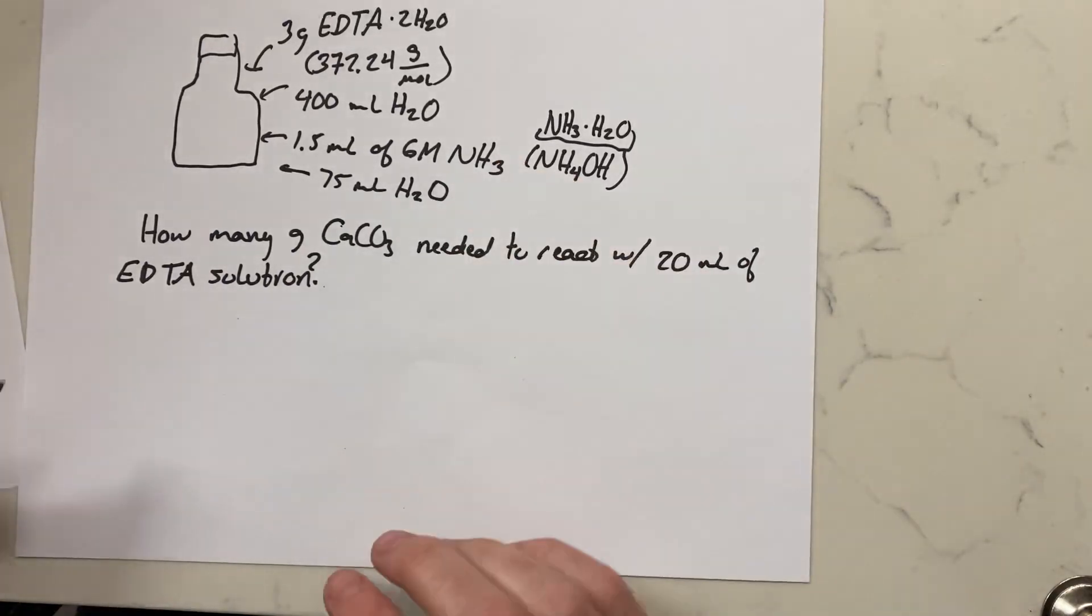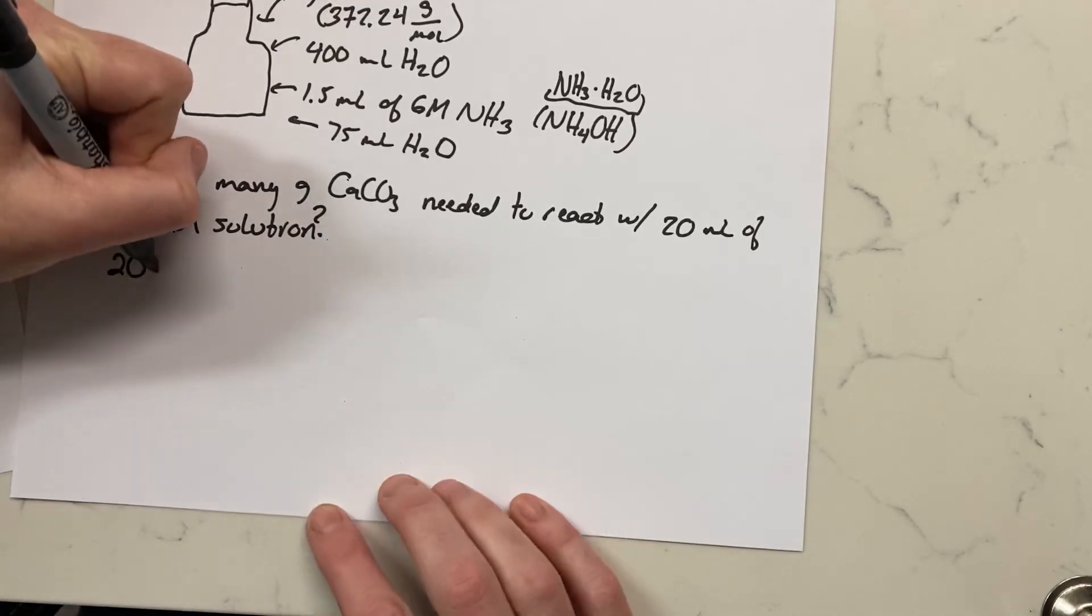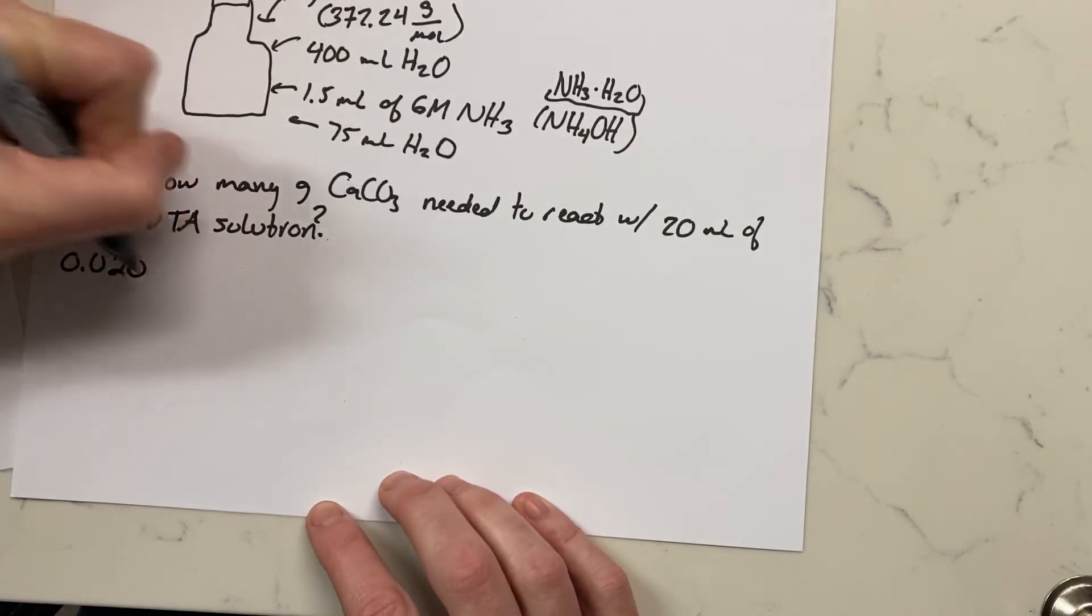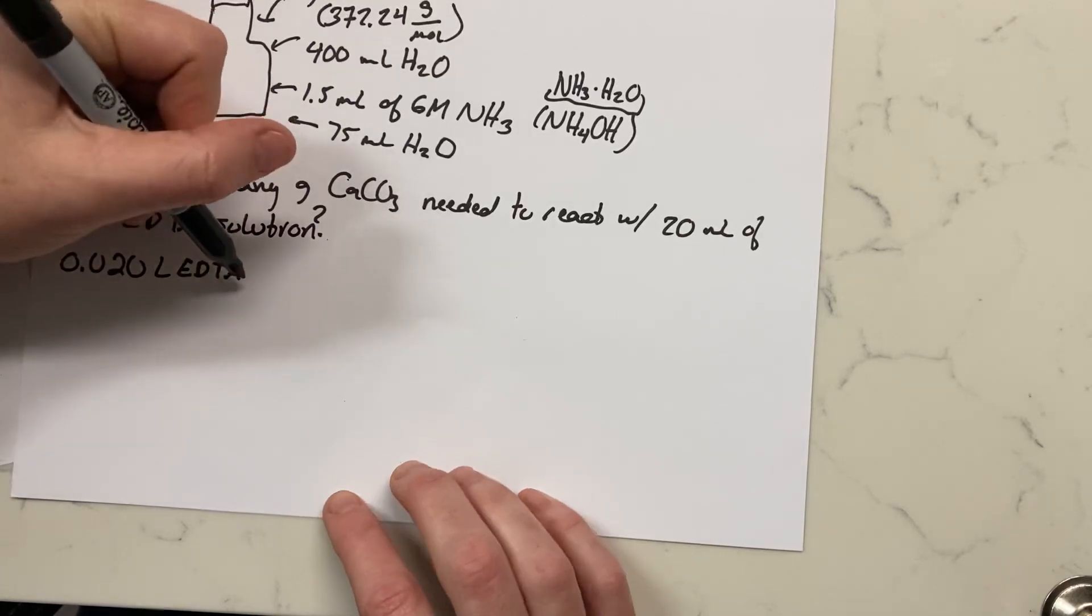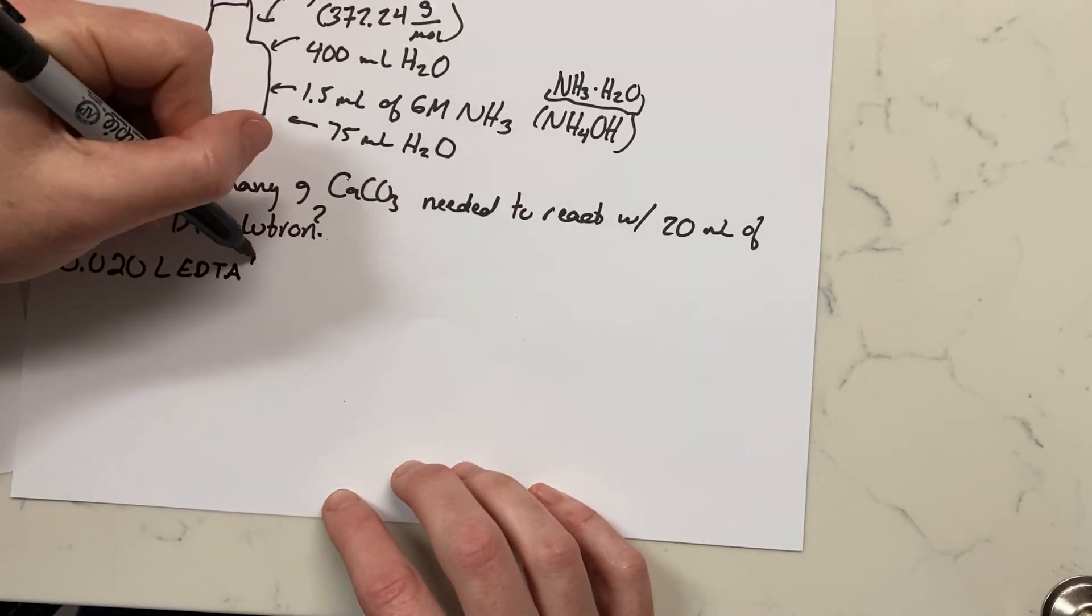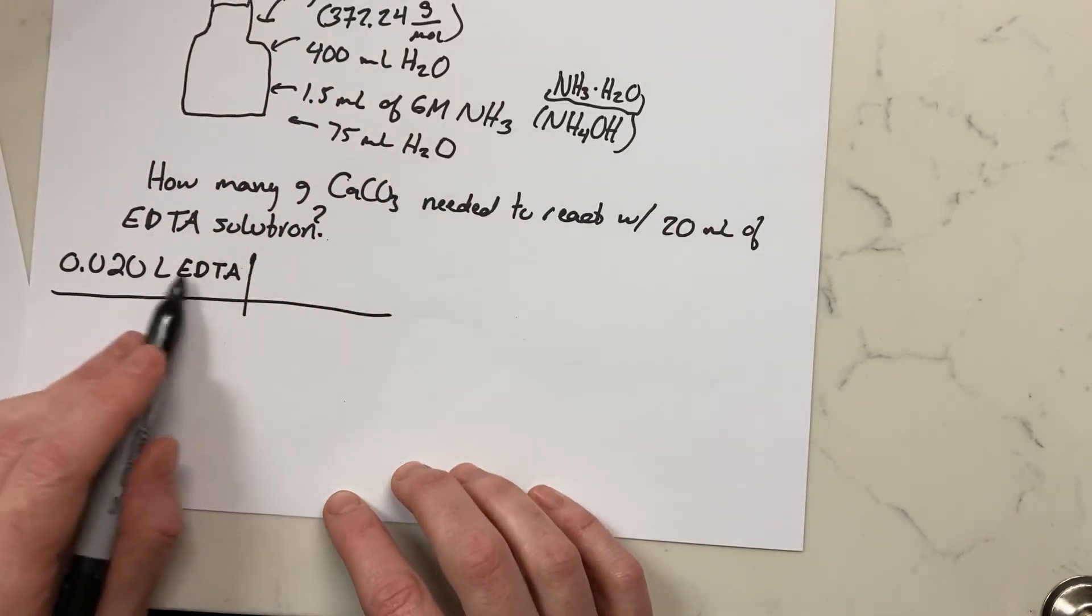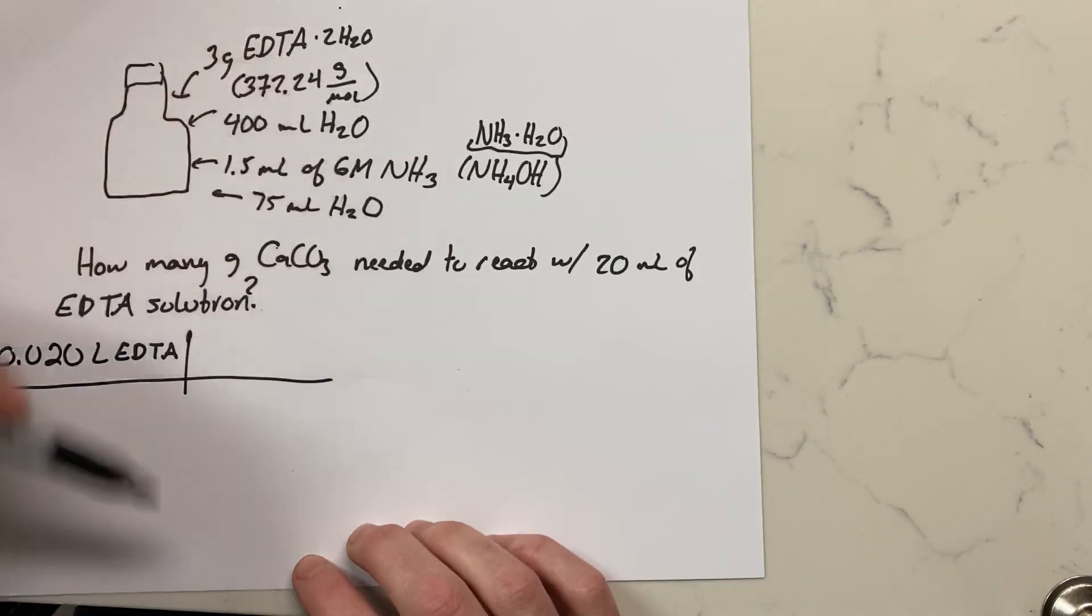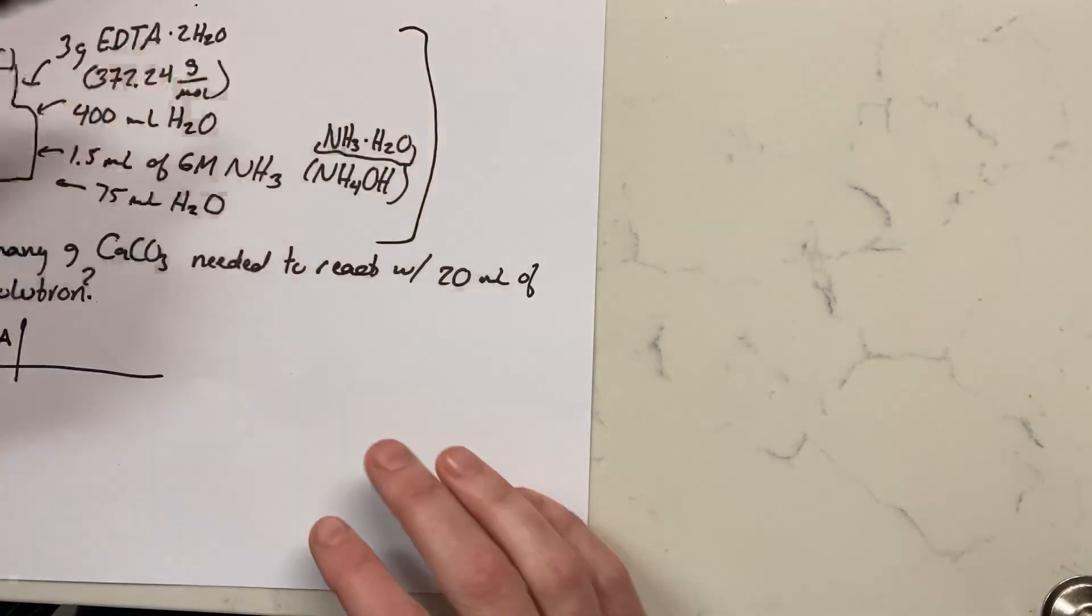For example, if we take 20 milliliters or 0.02 liters of EDTA, we need to figure out the concentration of this EDTA solution, and we'd be able to work through.